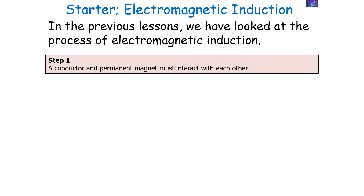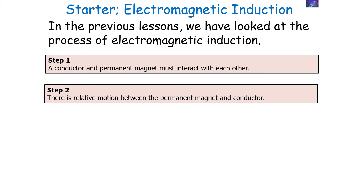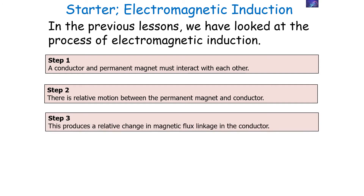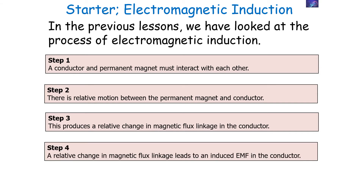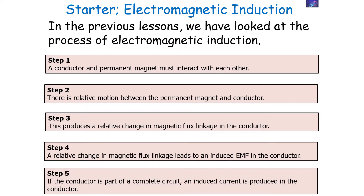In previous lessons we've looked at the process of electromagnetic induction. In this process, the first step is that a conductor and a permanent magnet must interact with each other. Then step two, there must be relative motion between this permanent magnet and the conductor. Step three, this produces a relative change in the magnetic flux linkage in the conductor. Then step four, the relative change in magnetic flux linkage leads to an induced EMF in the conductor. And finally, if the conductor is part of a complete circuit, an induced current is produced.